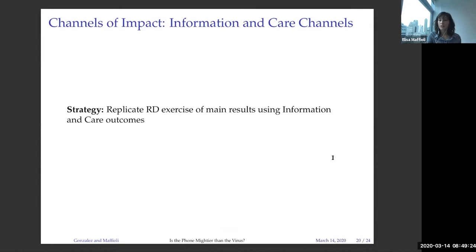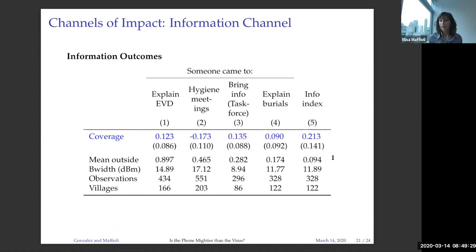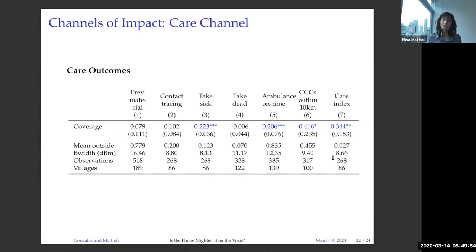We replicate the regression discontinuity design using these information and care outcomes. The last column is always a summary index expressed in standard deviations. There is no effect of cell phone coverage on information — no differences in levels of information in places with or without cell phone coverage. Instead, we see suggestive evidence that in places with cell phone coverage, respondents were more likely to report that people came to take sick relatives, ambulances were more likely to arrive on time, and community care centers were more likely to be built within 10 kilometers of the village — summarizing the care index.